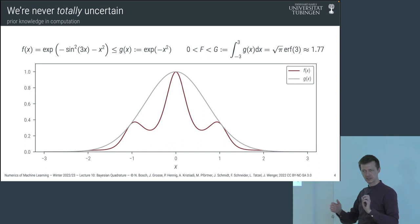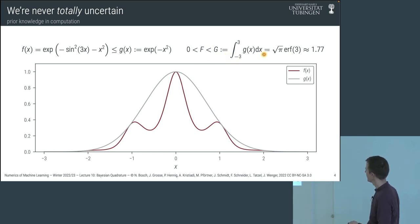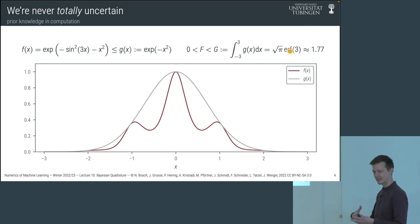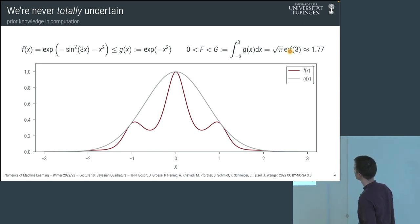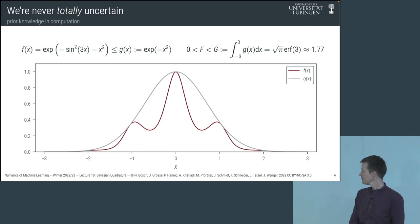We can also use the Gaussian as a tighter upper bound. The integral of exp(minus x squared) over the full real line is sqrt(pi). For the definite integral from minus 3 to plus 3 we need to multiply by a correction factor, which is the error function of 3. That function is available in the GNU C library and in scipy.special. If we call it, we get 1.77 — so we now know F lies between 0 and 1.77, which is already a pretty narrow range.